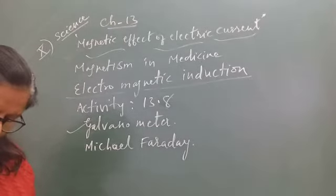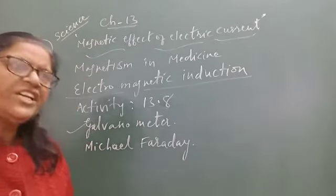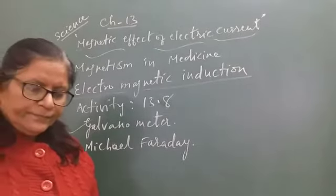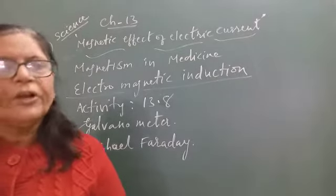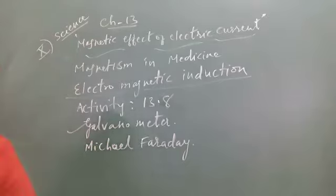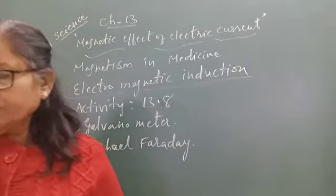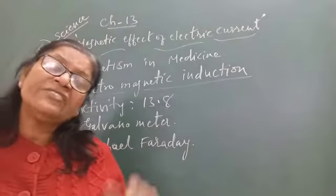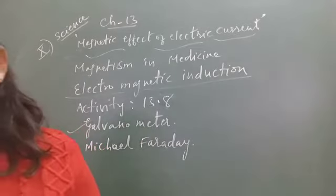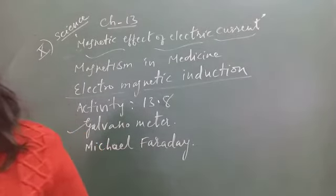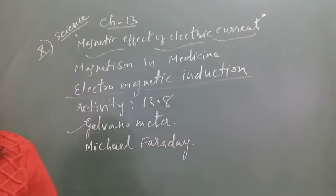Now take a strong bar magnet, move its north pole towards end B of the coil. Is any change in galvanometer or any deflection seen? There is a momentary deflection in the needle of galvanometer on the right side. It indicates the presence of current in coil AB. The deflection becomes zero the moment the motion of magnet stops. Now, we draw the north pole of magnet away from the coil.